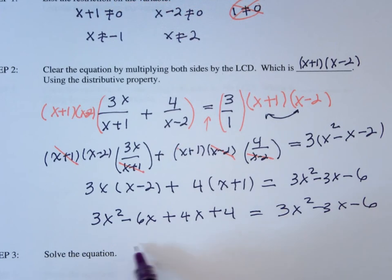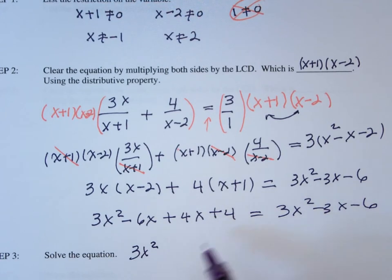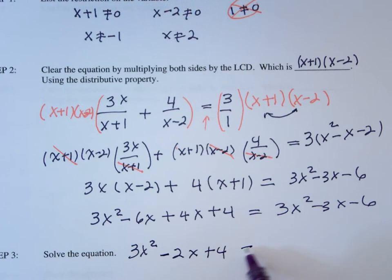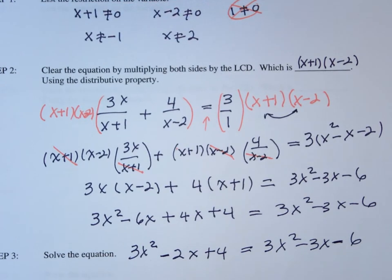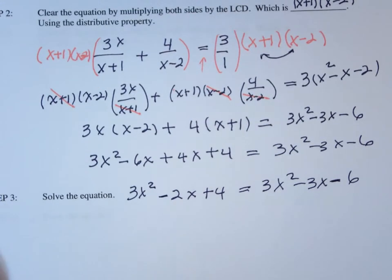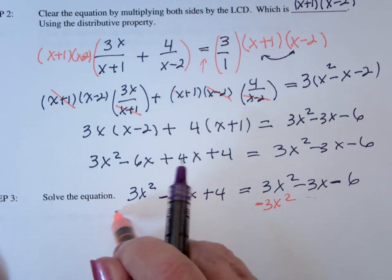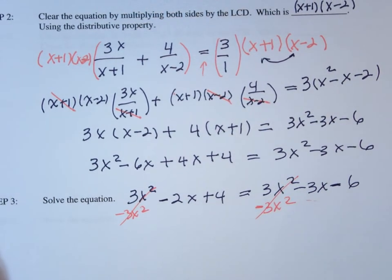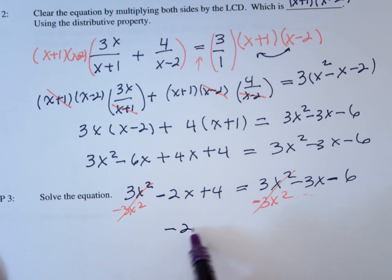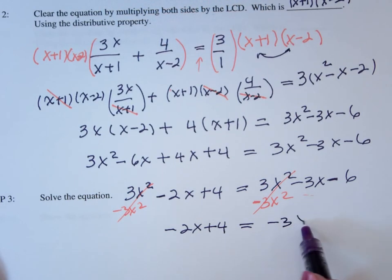Now, combine my terms. I get 3x squared and minus 6x plus 4x is minus 2x plus 4 equals 3x squared minus 3x minus 6. Start to solve the equation. Take 3x squared and I say, yippee, because the x squareds add to 0. So minus 2x plus 4 equals minus 3x minus 6.